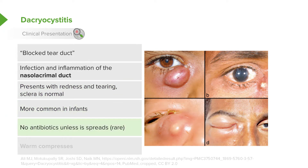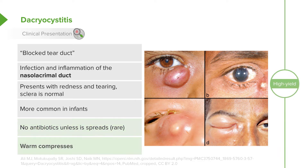Again, antibiotics are really not necessary unless it spreads into a preseptal cellulitis. I might use antibiotics in some of these cases. Generally, warm compresses are the way to go for this — 10 minutes, four times a day.